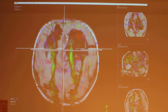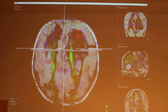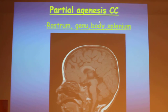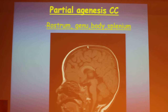On DTI, we can see the parallel fibers of the corpus callosum going from one side to the other, and the bundle of Probst fibers swirling in the frontal region. We recall that the corpus callosum forms from anterior to posterior: rostrum, genu, body, and splenium. We can have partial agenesis of corpus callosum — usually absent parts are the splenium and rostrum, which form later.